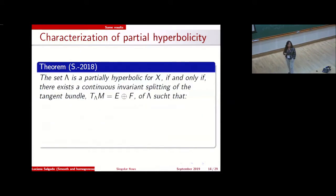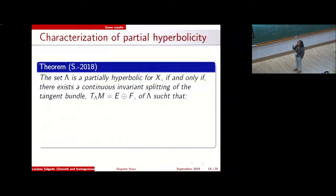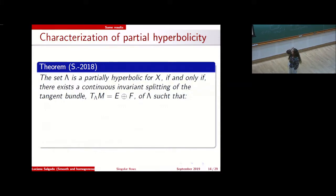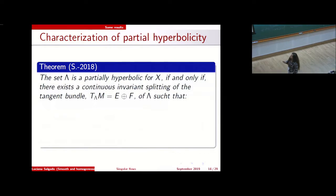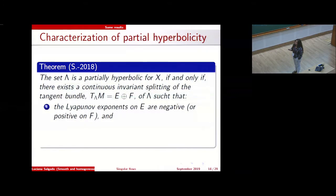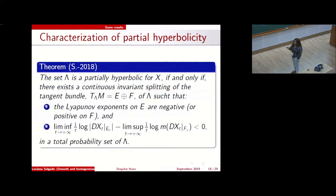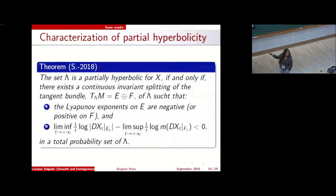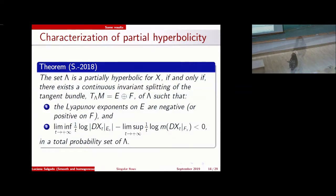The second characterization I want to show is the characterization of partial hyperbolicity using the first result. We have partial hyperbolicity for this set if there exists a continuous invariant splitting such that the Lyapunov exponents in the E direction are all negative and those in F are all positive, together with the domination gap — on a total probability set.